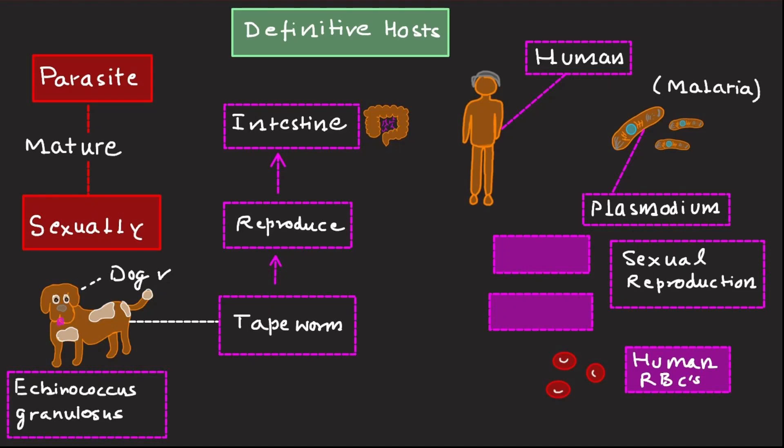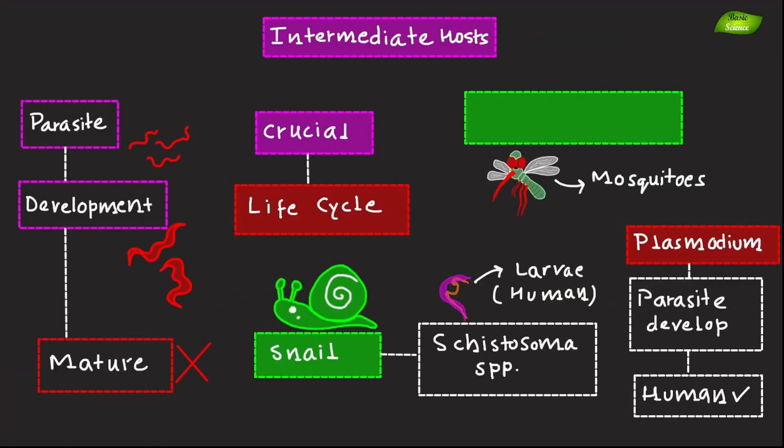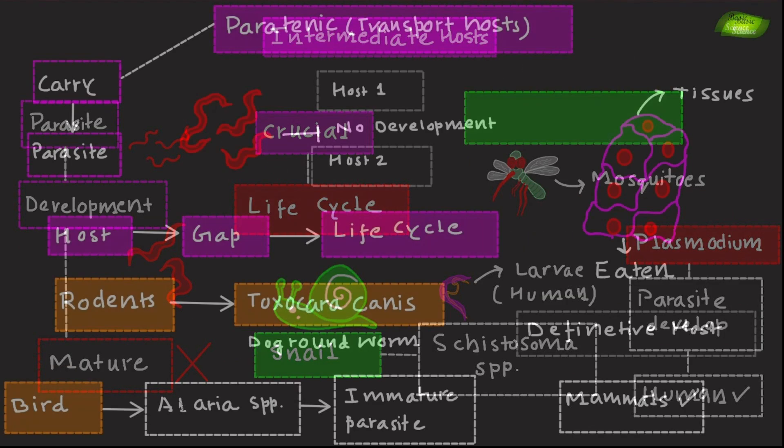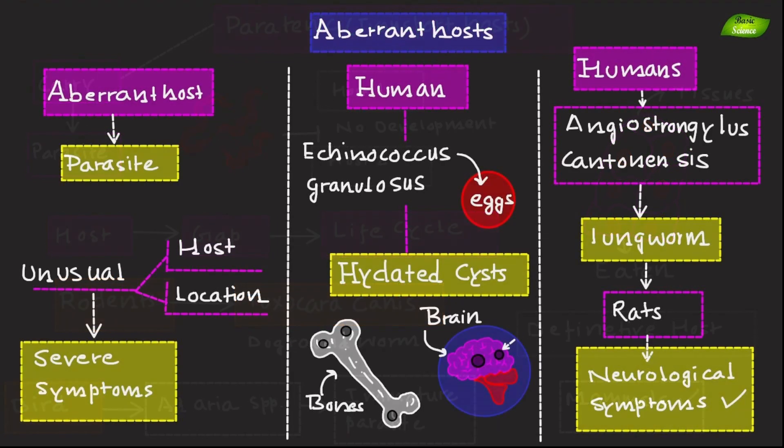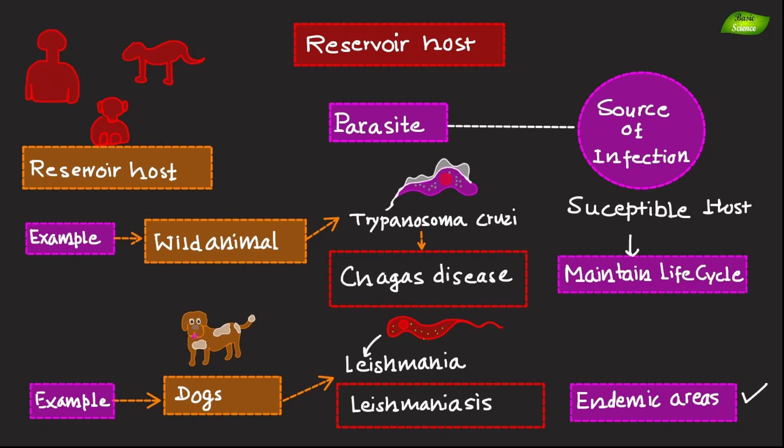Hello everyone, welcome to today's video and today we will understand different types of hosts. For example, we will understand definitive hosts, intermediate hosts, paratenic hosts, reservoir hosts, etc. And we will also understand how the parasite interacts with the host with certain examples. So I hope that this video is going to help you to understand types of hosts in parasitology in more detail.